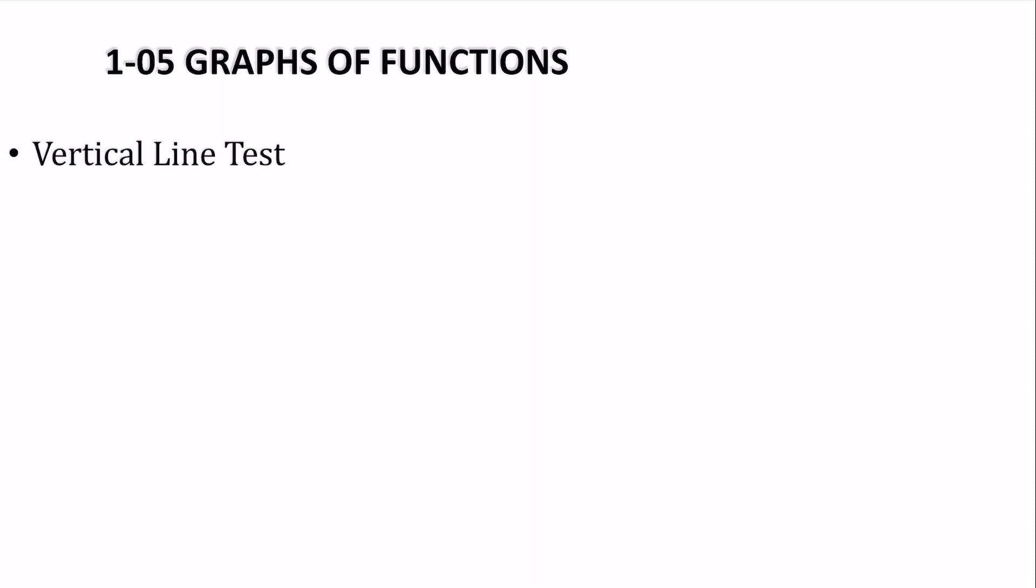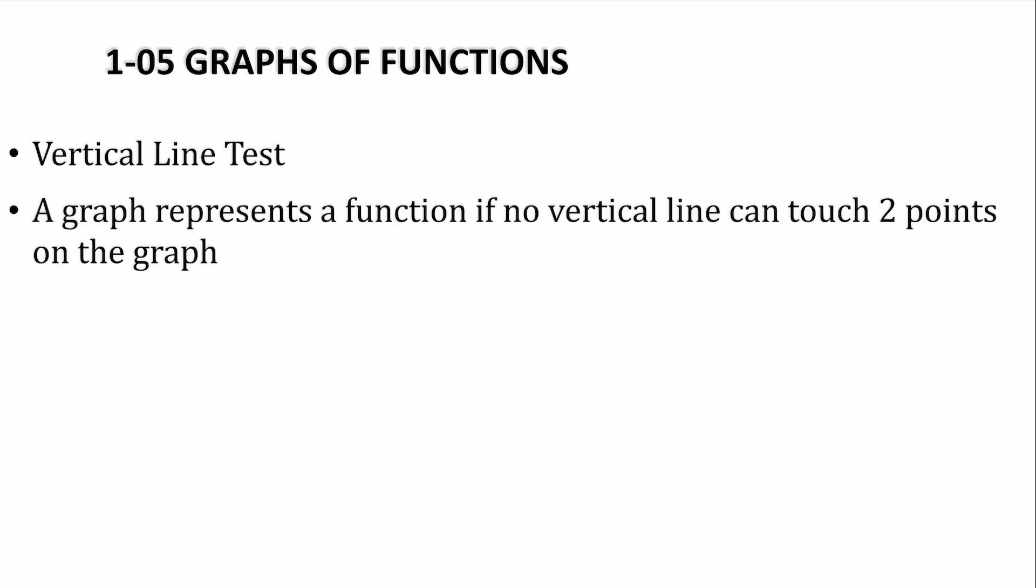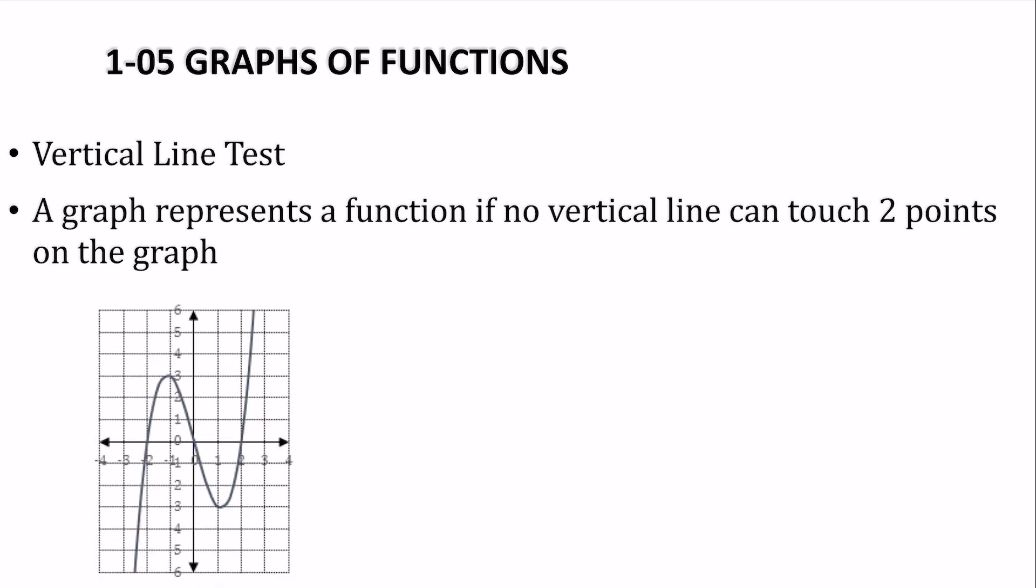To determine if a graph represents a function, we use the vertical line test. It says a graph is a function if no vertical line can touch two points on the graph. So here's the first one. Is this a function? Yes, this is a function. Any vertical line touches the graph only once. No line touches the graph twice.